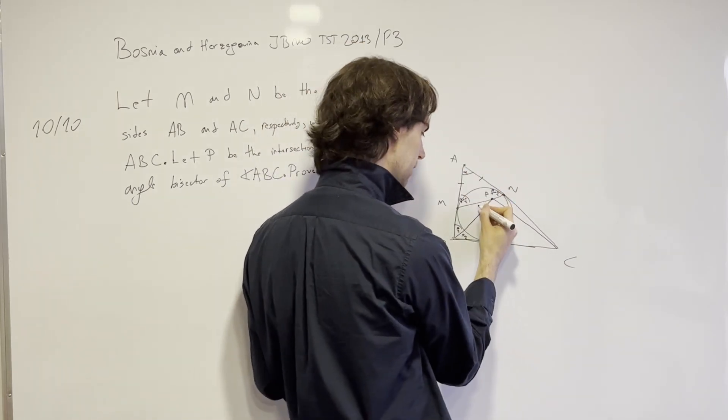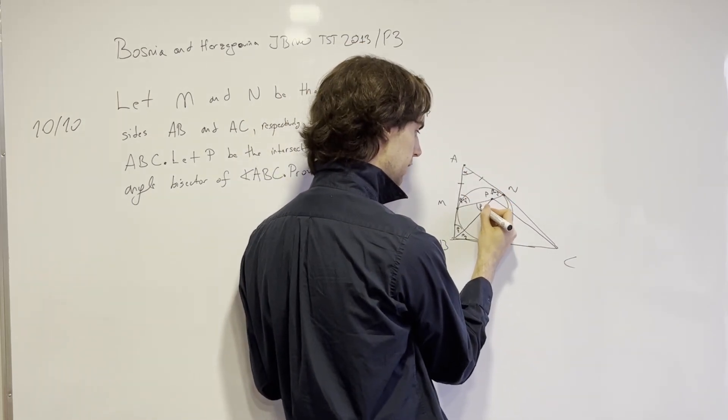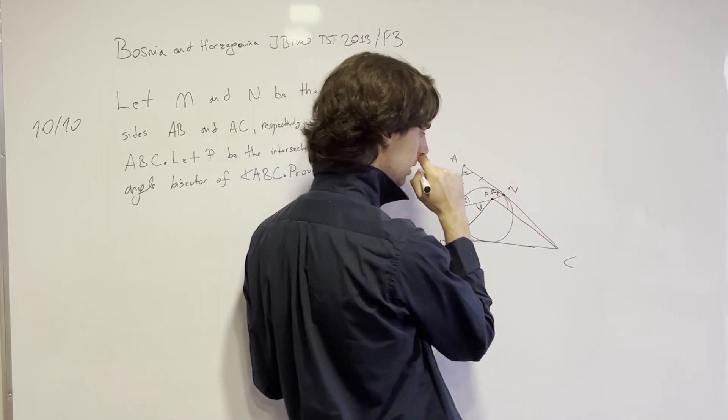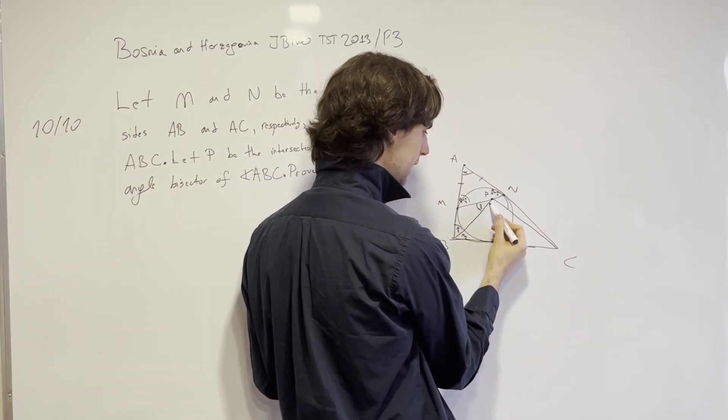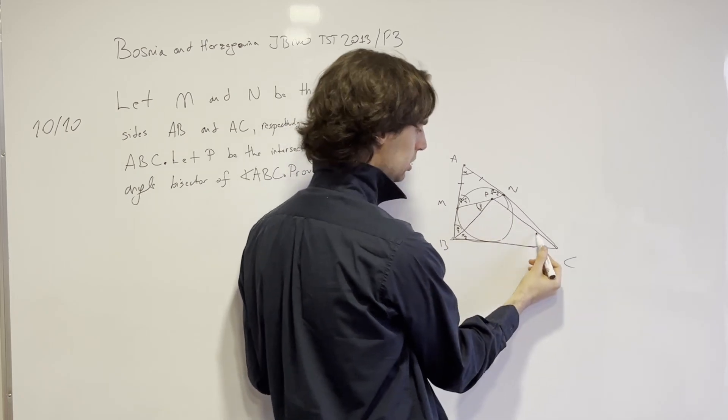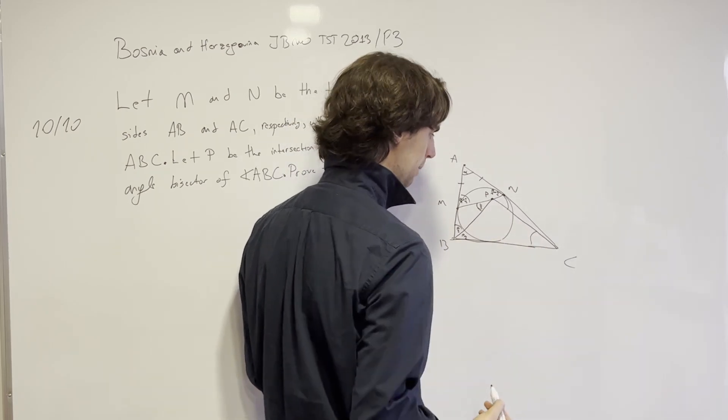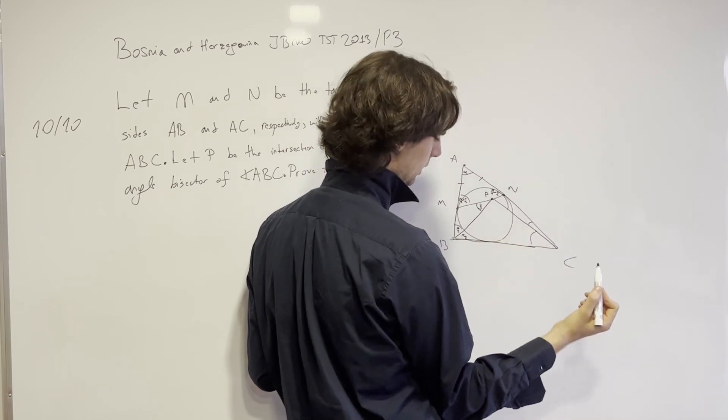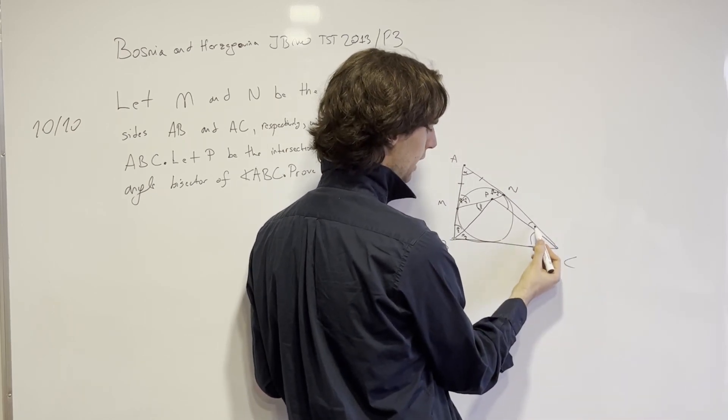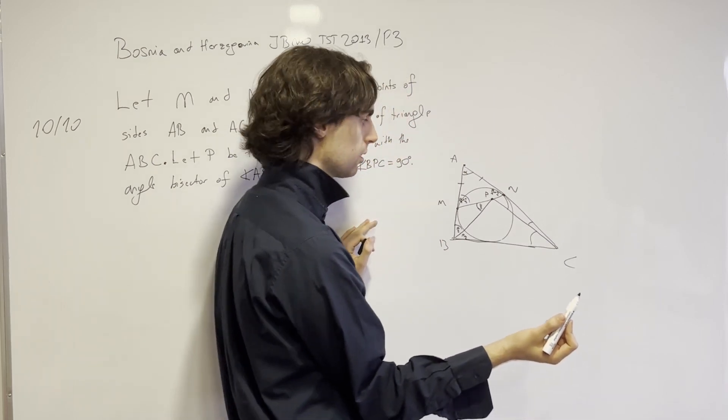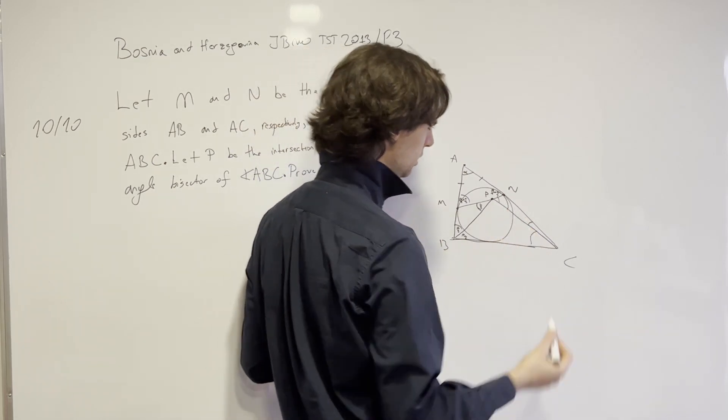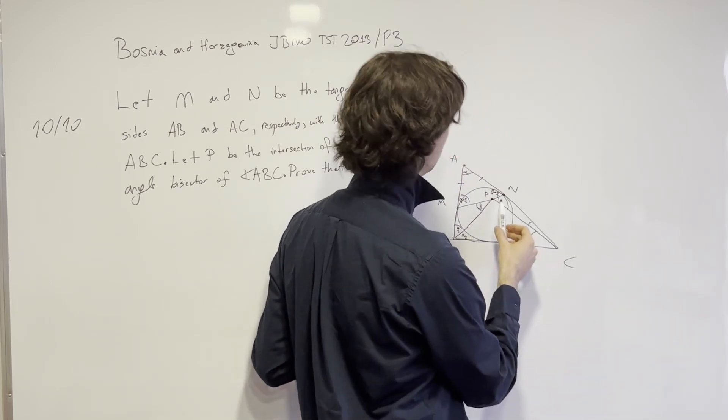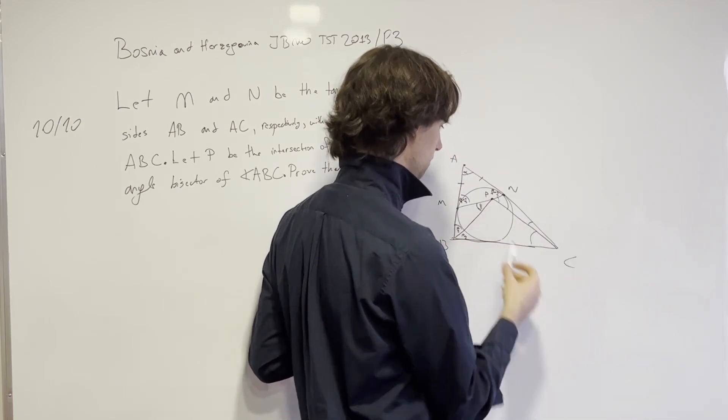We have this angle here is going to be gamma/2. We need this angle to be 90, so we need this one to be alpha/2 plus gamma/2. So we need this one to be gamma/2 minus alpha/2. Then this angle needs to be, if this is gamma/2, then this one must be alpha/2 plus beta/2 to get to this.